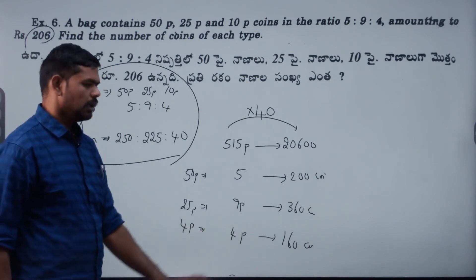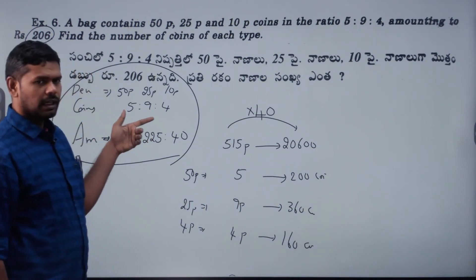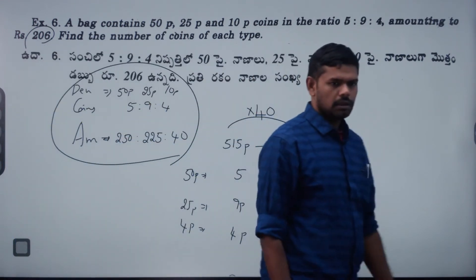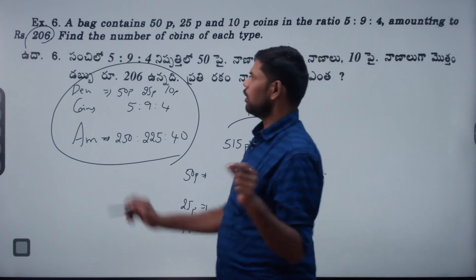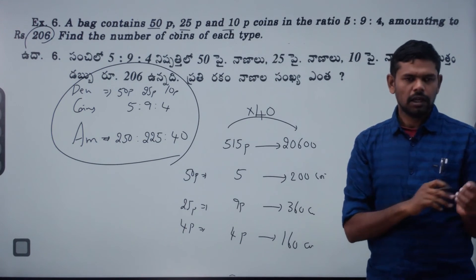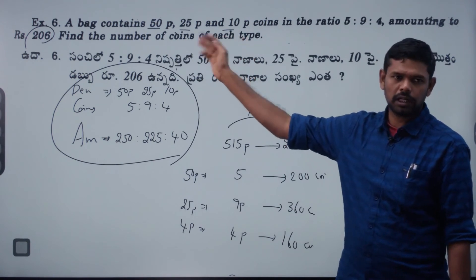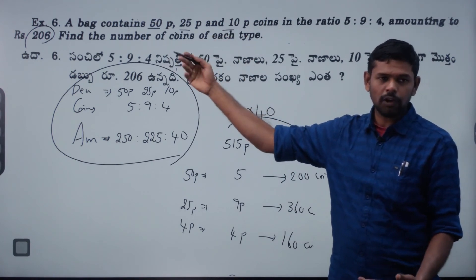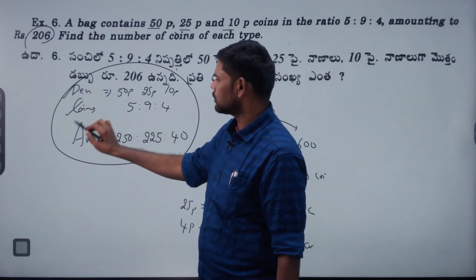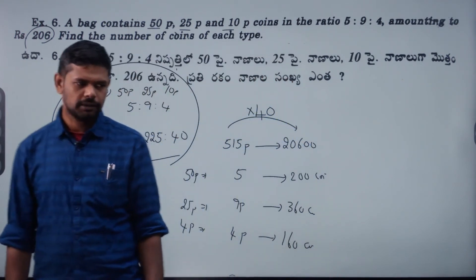So: 200, 360, 160. This type is a different procedure but easy to use. If you use this method, it is easy to use. The other method: denomination, kinds, amount — or denomination, amount, kinds. Clear? Doubt. Easy to explain.